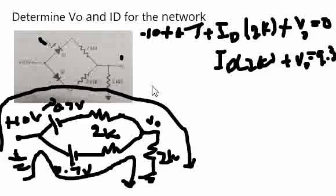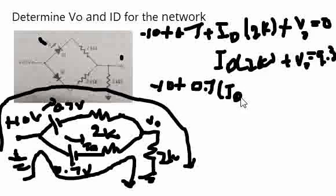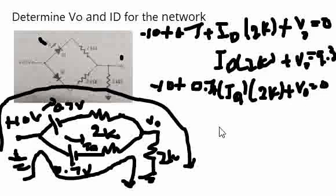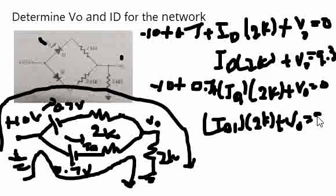Now, let us see the inner one or the bottom one. Minus 10 plus 0.7, and then let us treat this current as ID1. 0.7 plus ID1 into 2K, plus V0 is equal to 0, which again is ID1 into 2K, and plus V0 is equal to, again, 9.3.